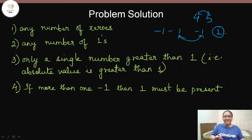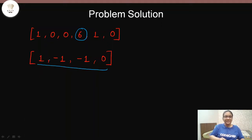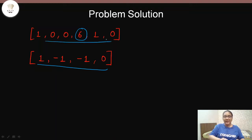So these are the kinds of arrays that will be valid. For example, [1, 0, 0, 6, 1, 0] — we have zeros, ones, and just one element whose absolute value is greater than one. Similarly, [-1, 1, 0] is a valid combination. If you pick any sequence from these arrays, the product will always be present in the array.